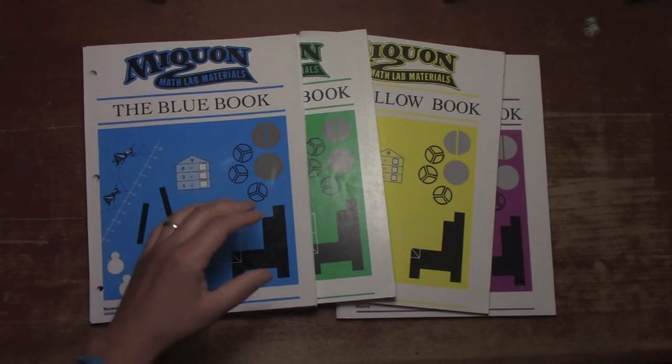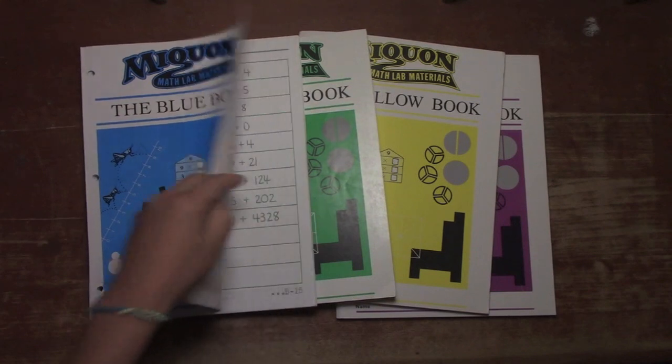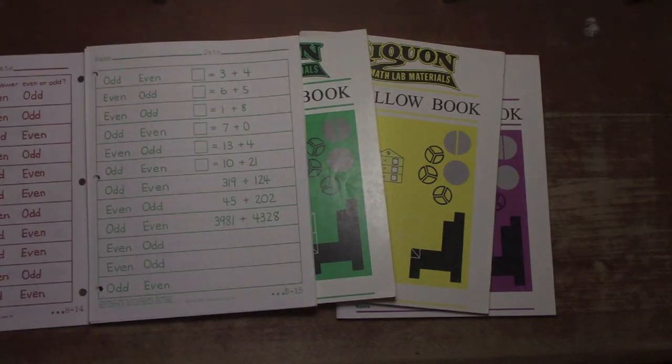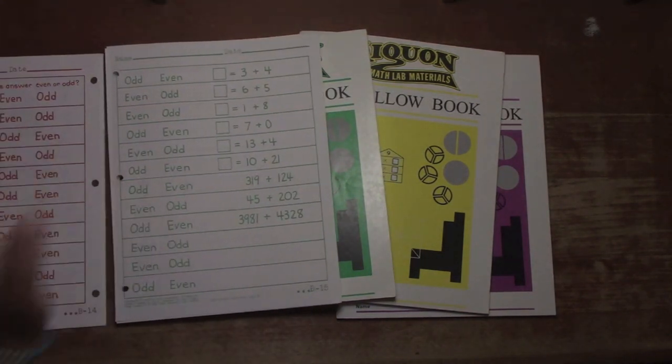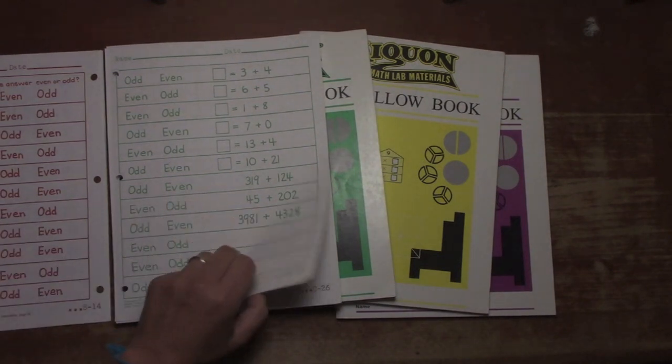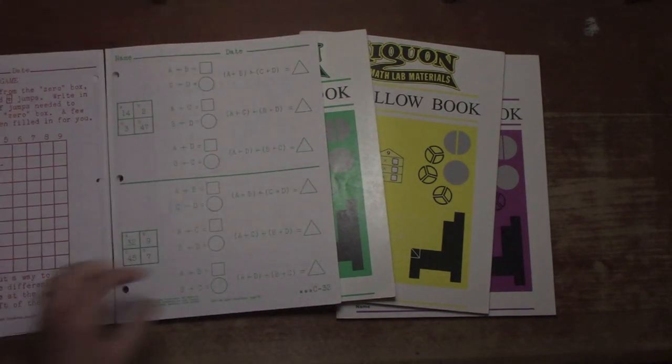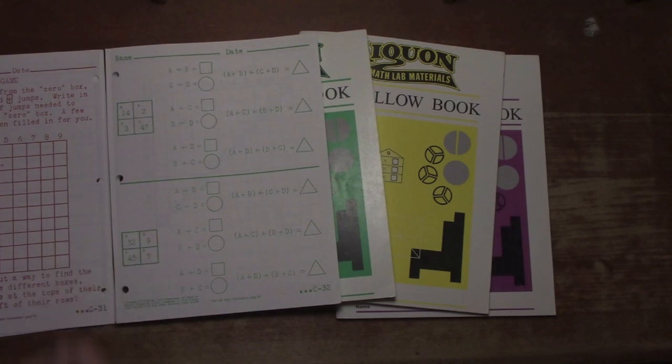The problem with Miquon books is, as we get started here, you'll see we'll open the book, and you'll see that each of the pages is so colorful, which is a good thing. I like it. My students like it. It's very fun for them to see the different colors on each page. But you'll also see that with the colors being as they are, photocopying, not only is it more expensive to photocopy colors, which I could get over, you can photocopy them in black and white, but they're actually quite faint.